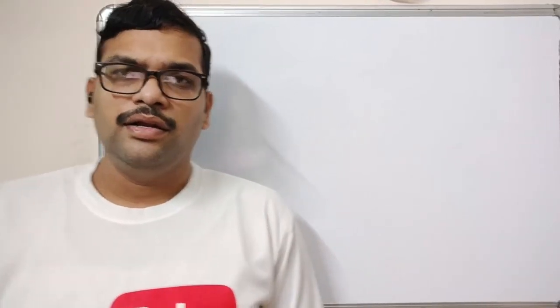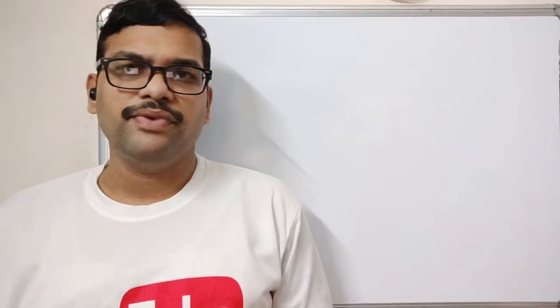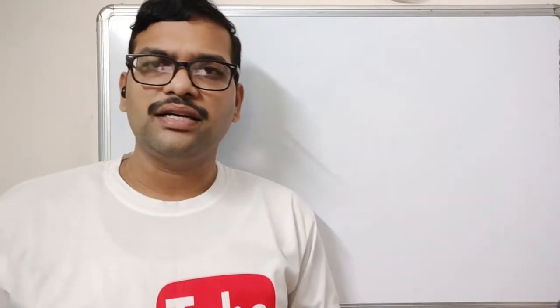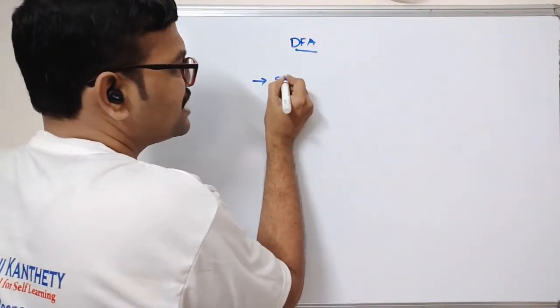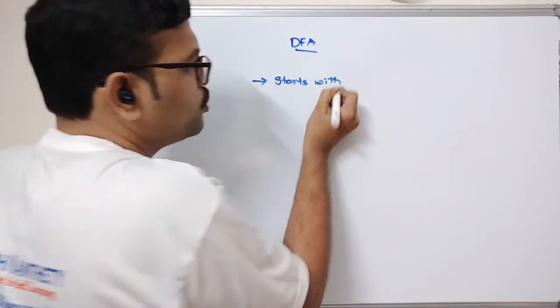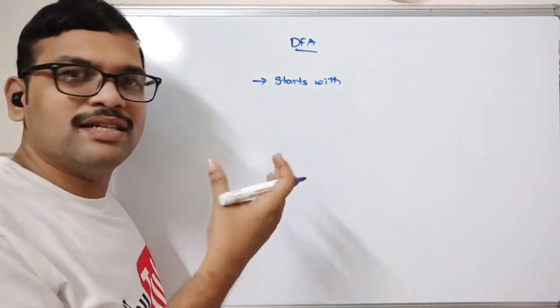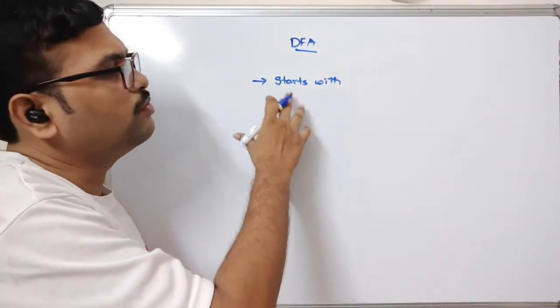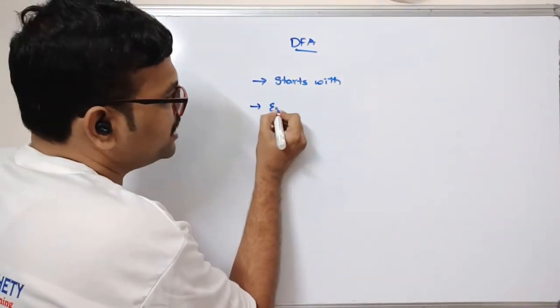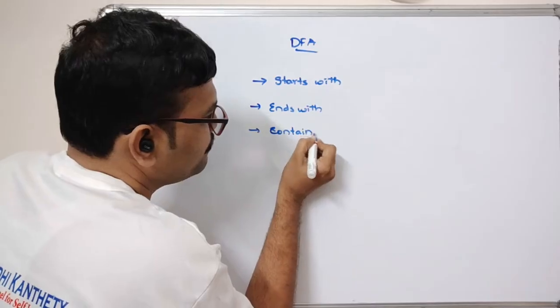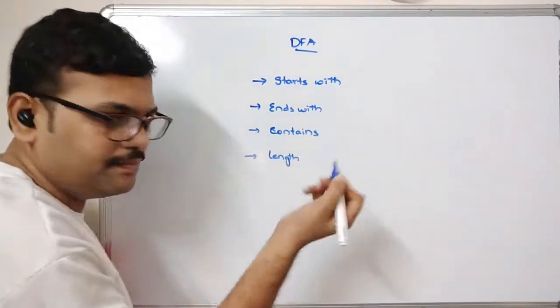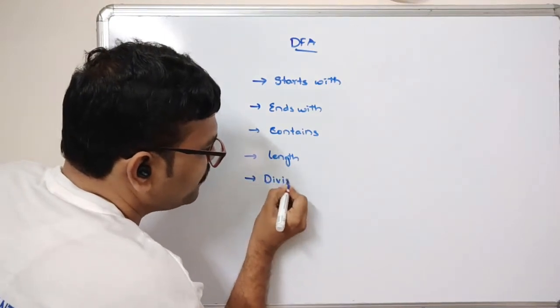Welcome back to our channel. In today's session we'll discuss how to construct the Deterministic Finite Automata (DFA). In the previous session we discussed DFA and NFA, two types of finite automata. Today we'll see how to construct the DFA. The DFA problems fall into different categories: starts with, ends with, contains, length of a string, and divisibility problems.